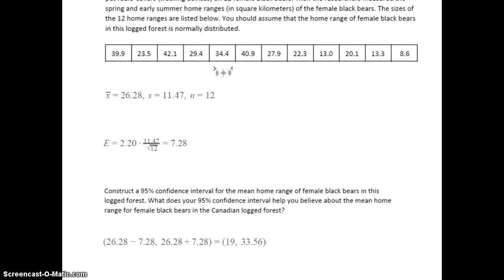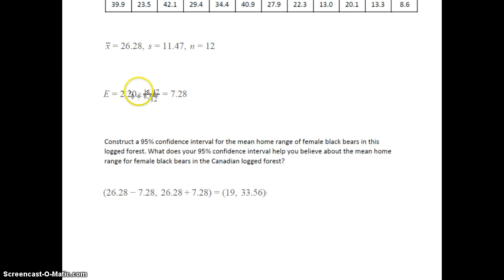So now we take the t-critical value times s, 11.47, over the square root of n, the square root of the sample size. The margin of error is 7.28.